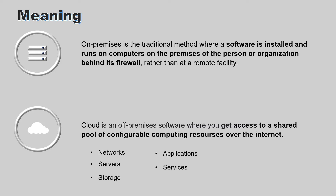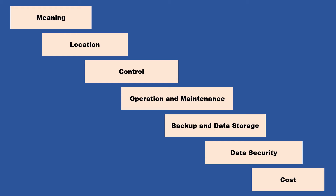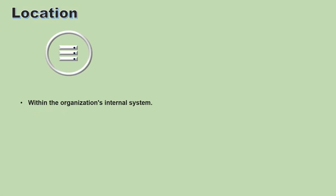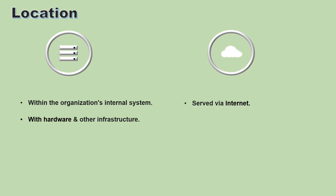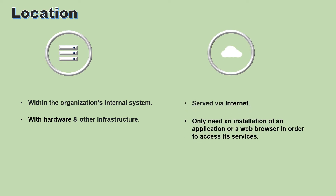Users only have to install an application or web browser to access cloud services. On-premise software is established within the organization's internal system, along with the hardware and other infrastructure necessary for the software to function. Cloud-based software is usually served via the internet and can be accessed by users online regardless of the time and their location.